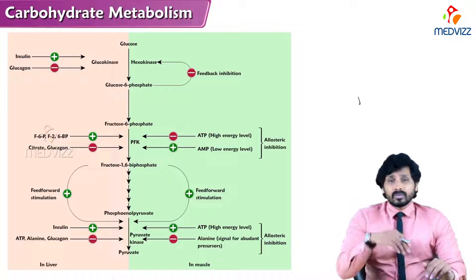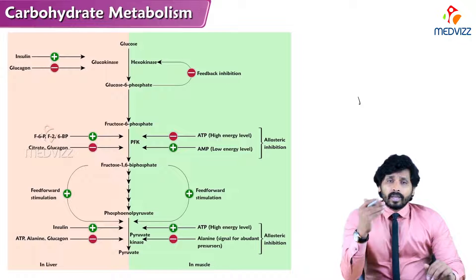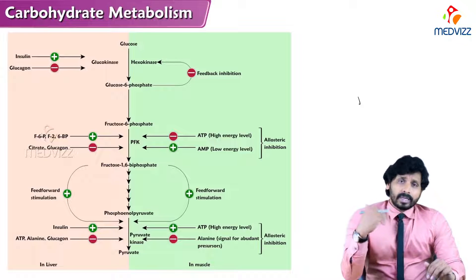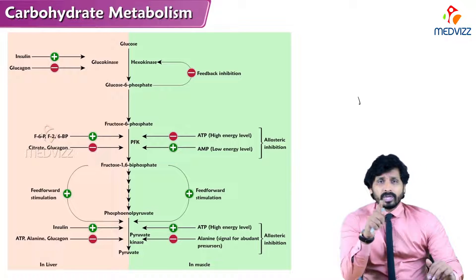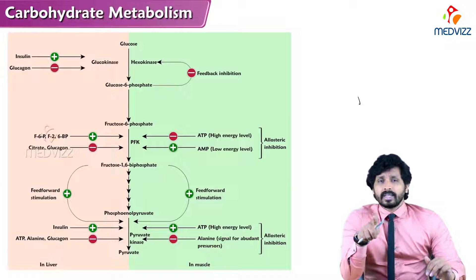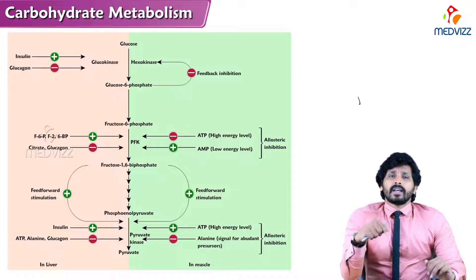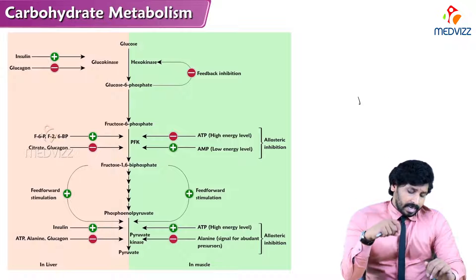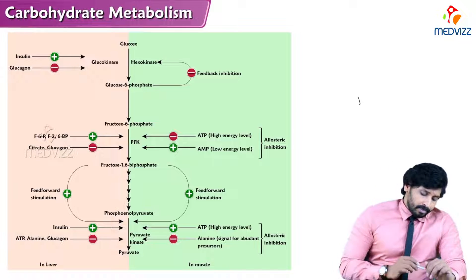At the first step — glucokinase or hexokinase — insulin is an activator. When there is excess glucose in circulation entering the cell, insulin is released from the pancreas and activates the first step enzyme, glucokinase or hexokinase. Similarly, glucagon plays an opposing role.